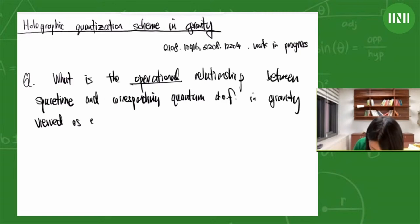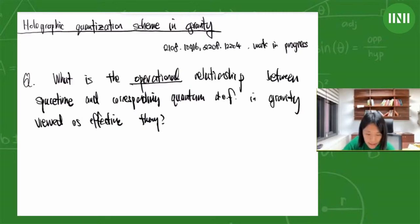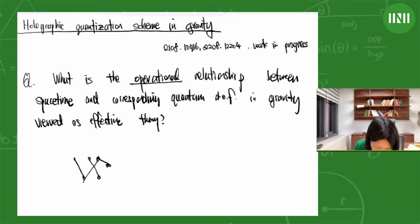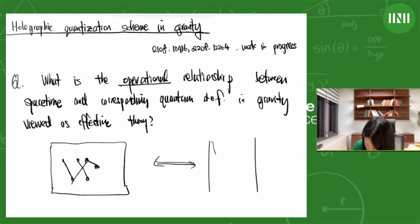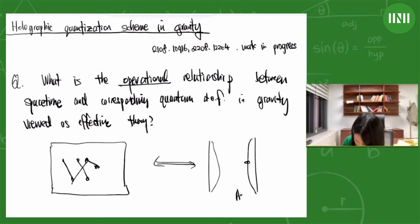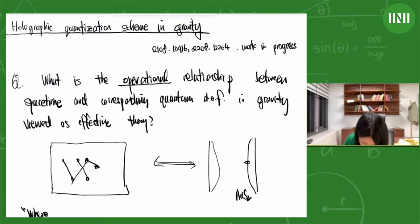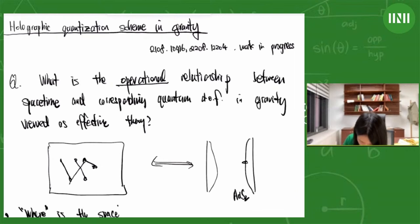From the low energy point of view, suppose we had some realization or simulation of the SYK model in the lab — some strongly interacting many-body system in a box. We could ask: where exactly is the gravity dual to this many-body system? Where does the spacetime dual to this model exist?